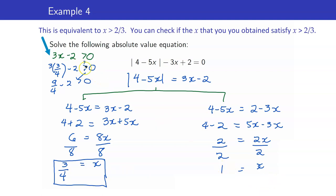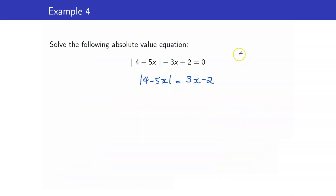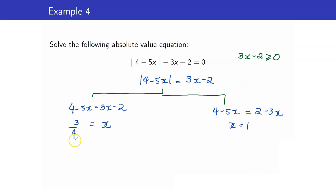We can streamline this process by assuming 3x minus 2 is greater than or equal to 0, so that we only need to check once. We again obtain x equals 3/4 and x equals 1, and verify that both satisfy the condition. This way, you no longer need a separate step for the case where the expression equals 0.